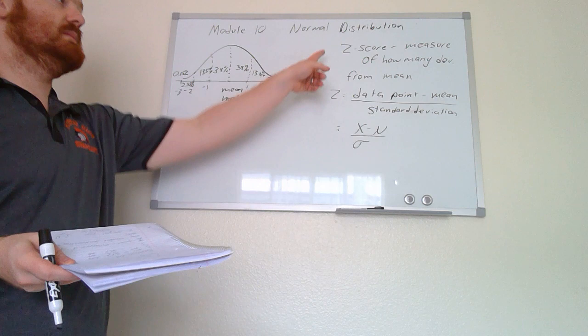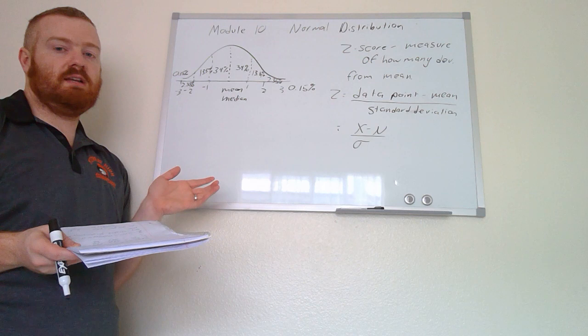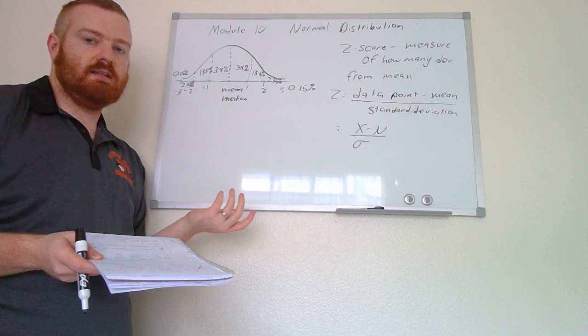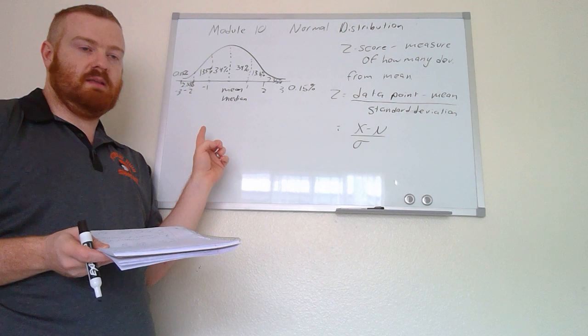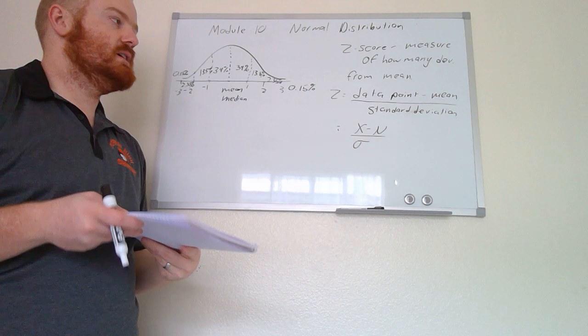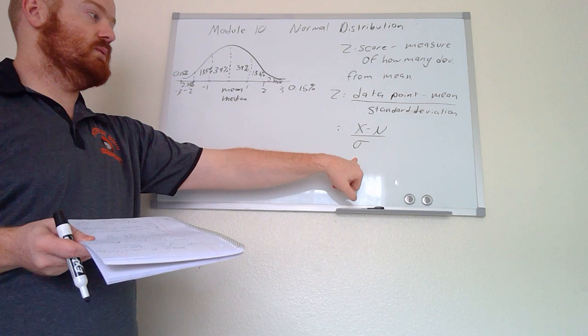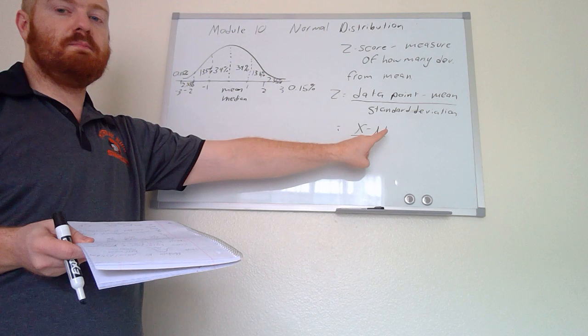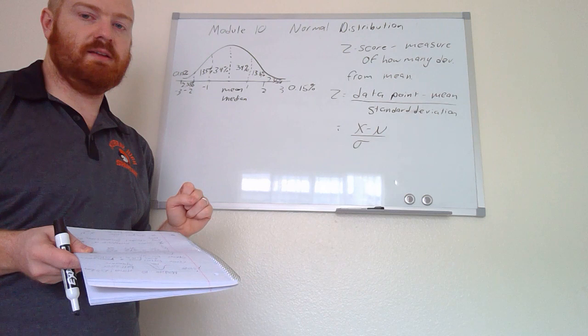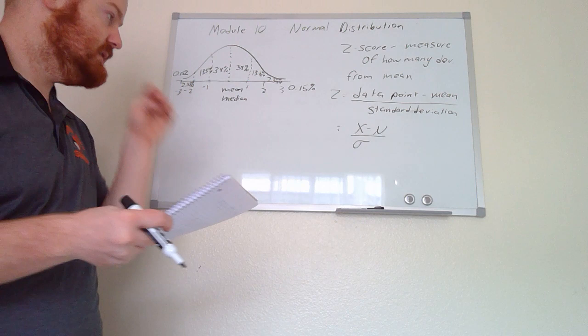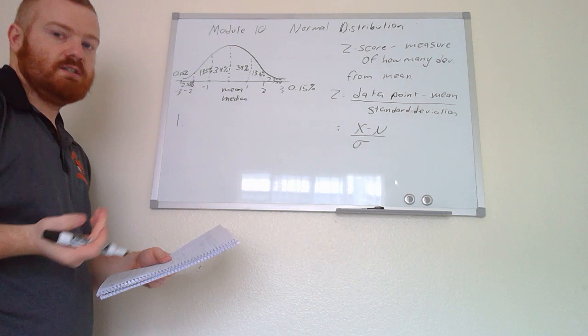One of the most important values we'll calculate is the z-score. The z-score is a measure of how many standard deviations away from the mean you are. A z-score of 1 means one standard deviation above the mean; a z-score of -0.5 means half a standard deviation below. The formula is z = (x − μ) / σ, where x is the data point, μ is the mean, and σ is the standard deviation.